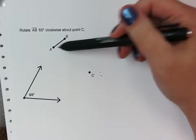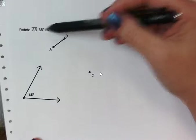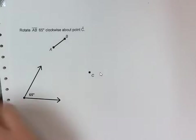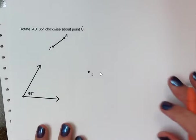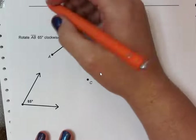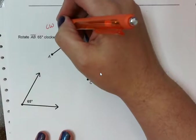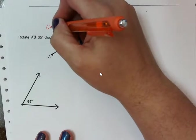We want to rotate segment AB 65 degrees clockwise about point C. Now remember, clockwise and counterclockwise, it's important that we pay attention to that. So clockwise goes in the direction the hands of a clock go.